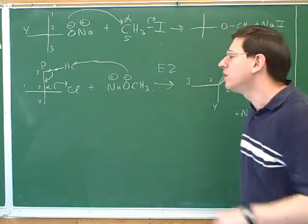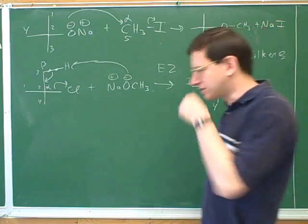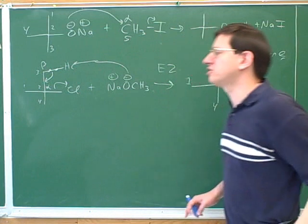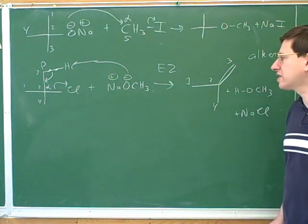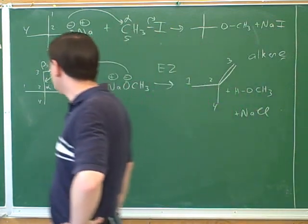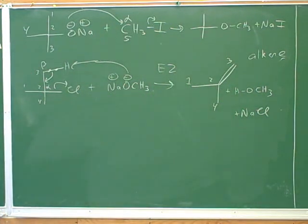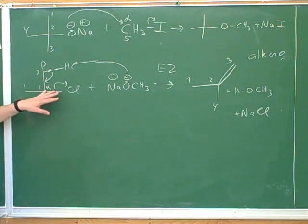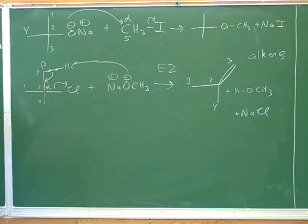The big lesson from this example is that a Williamson ether synthesis occurs between an alkoxide and a haloalkane. However, you have to make sure there's not too much steric hindrance. If there's too much steric hindrance, you're going to get E2 instead and then you'll get an alkene. In particular, this doesn't work for tertiary haloalkanes. That shouldn't have to be memorized — it should be clear from our table because a tertiary haloalkane can't do SN2, it can only do E2. But we need SN2 for the Williamson ether synthesis.